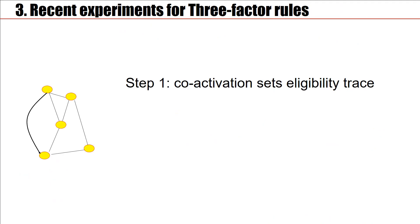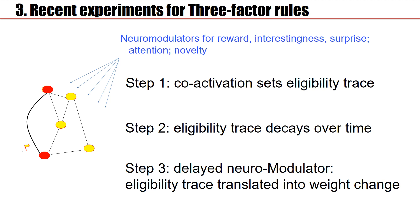Step one: co-activation sets the eligibility trace. Step two: it can decay. Step three: but if a neuromodulator comes in before the decay, then the eligibility trace is translated into a weight change, meaning the connection is strengthened.